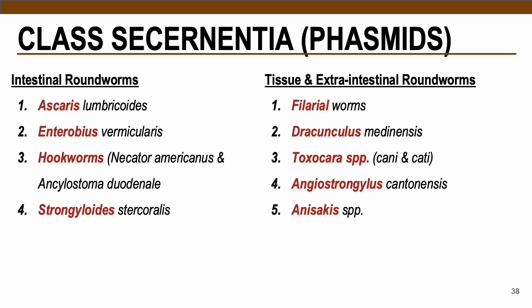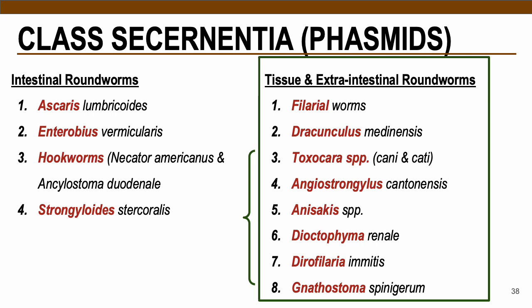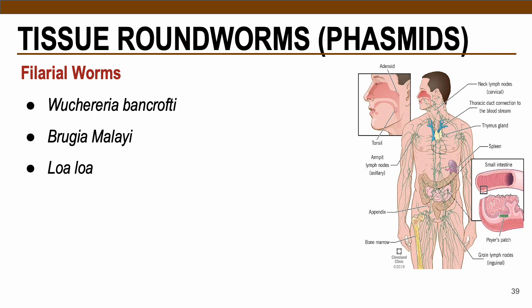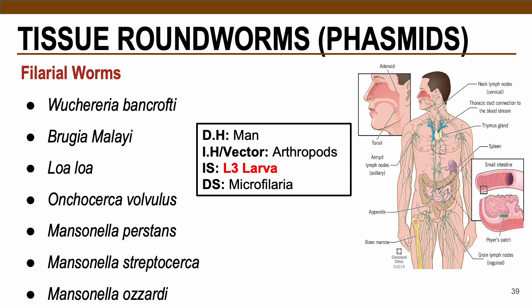We are now done with intestinal roundworms. Moving to tissue and extraintestinal roundworms: filarial worms and Dracunculus medinensis are considered human parasites, while Toxocara and others are zoonotic. For filarial worms — Wuchereria bancrofti, Brugia malayi, Loa loa, Onchocerca volvulus, and three Mansonella species — humans are definitive hosts harboring the adult stage, while arthropods are the intermediate hosts/vectors. The infective stage is L3 larva; the diagnostic stage is microfilaria found in blood or tissue.